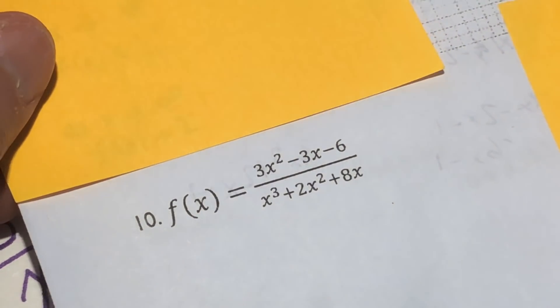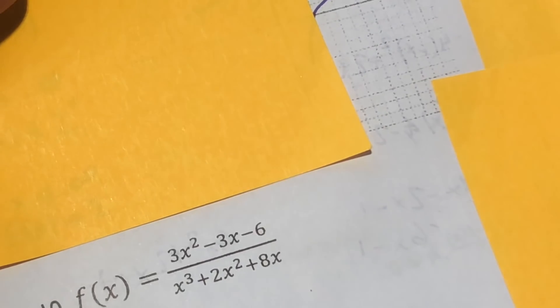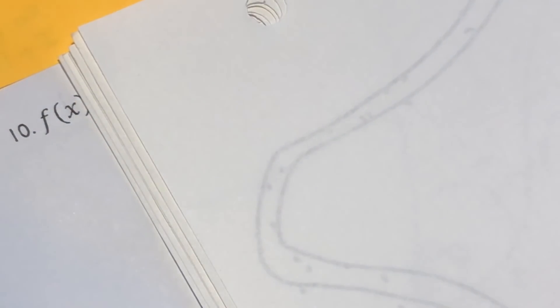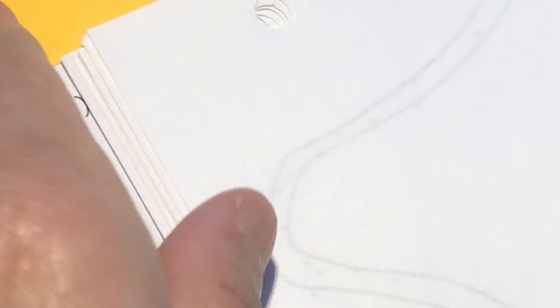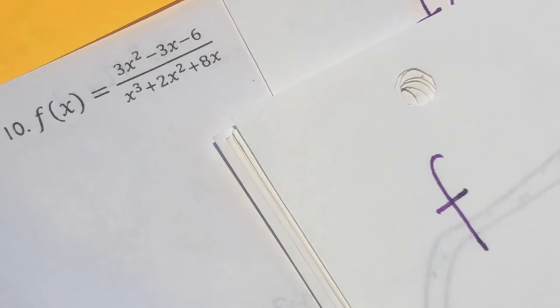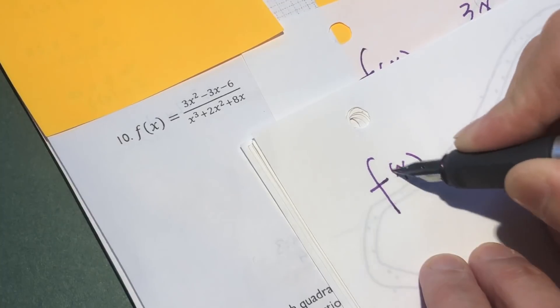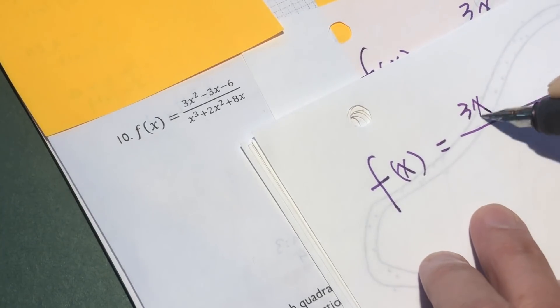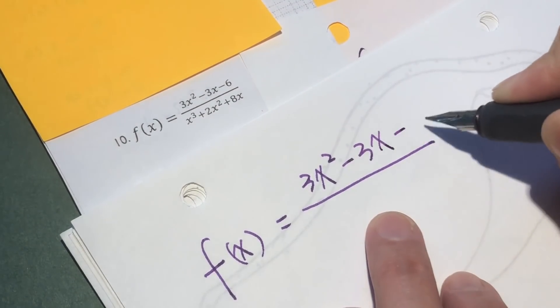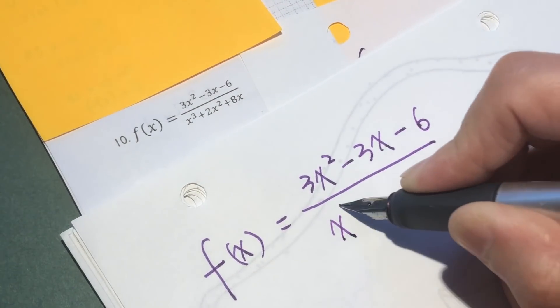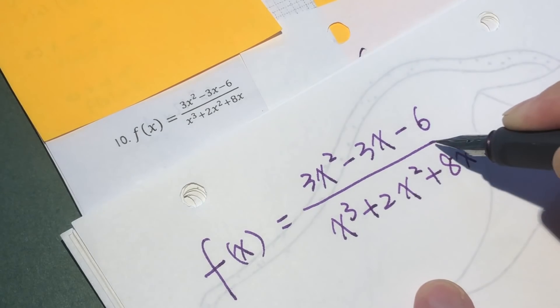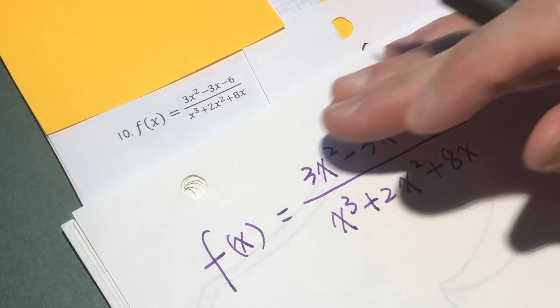So I was thinking, you do not think it's too complicated, you make it simple. So first, we copy this function: f(x) equals 3x squared minus 3x minus 6, divided by x cubed plus 2x squared plus 8x.